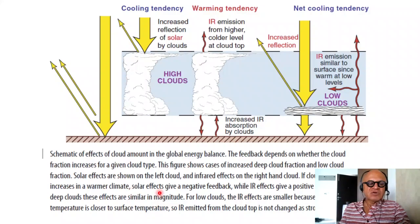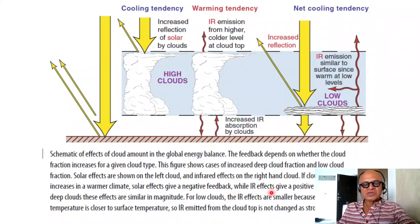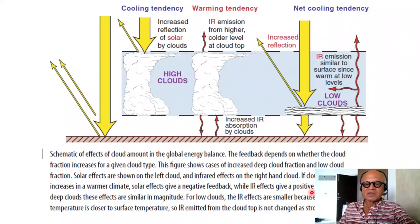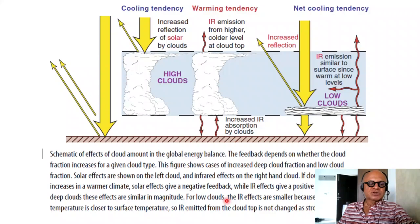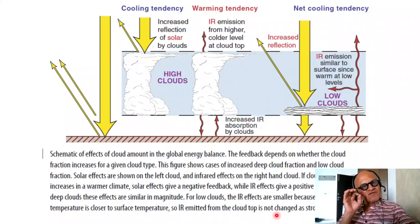If cloud fraction increases in a warmer climate, solar effects give a negative feedback — on the whole, clouds end up reducing the energy in the system — while IR effects give a positive feedback, so more of the outgoing longwave will be trapped. For deep clouds these effects are smaller and similar in magnitude. For low clouds, the IR effects are smaller because the cloud top temperature is closer to the surface temperature, so IR emitted from the cloud top is not changed as significantly.